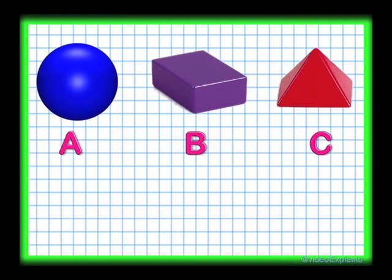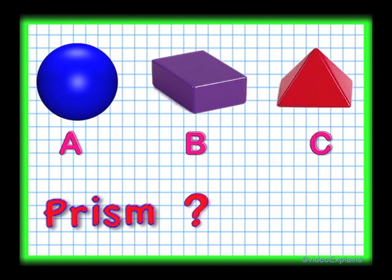A, B, and C are three different shapes. Which one of these is a prism? You'll have ten seconds to guess the answer.